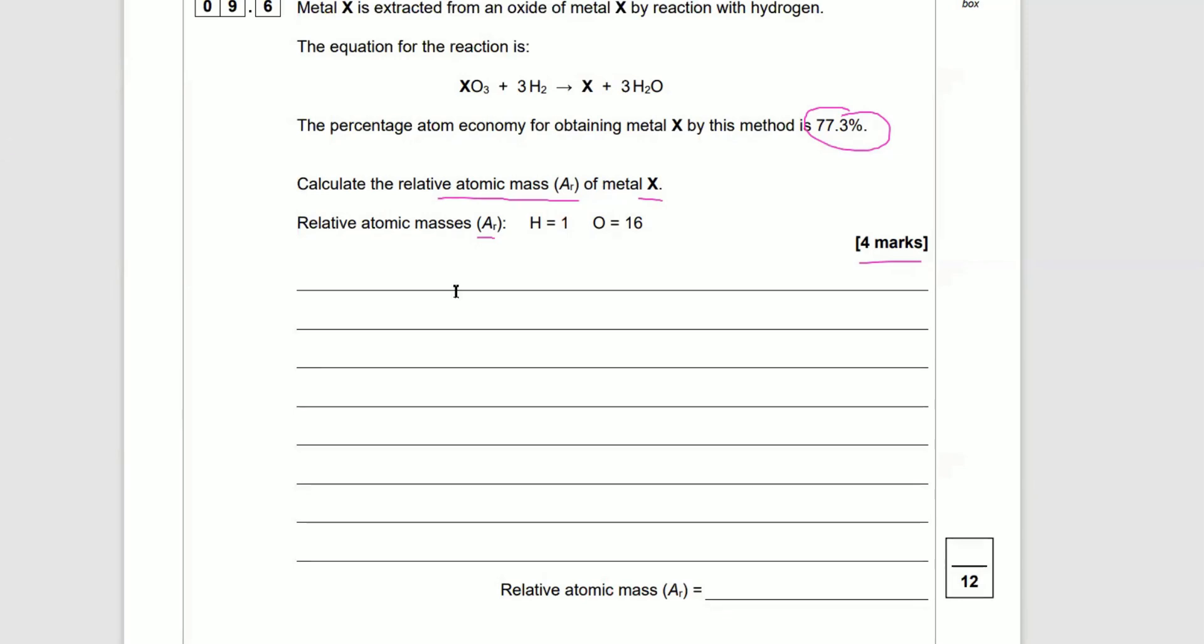It's good to use a bit of a highlighter to highlight key things. First thing off the bat here is you're going to get one mark if you know the atom economy equation off by heart. So it's going to get us off the board. Atom economy equals the Mr of useful products over...